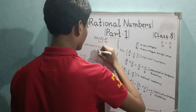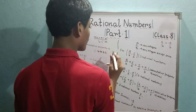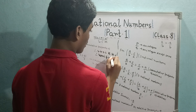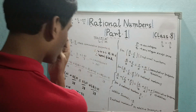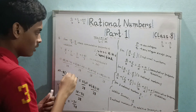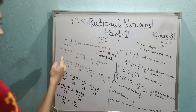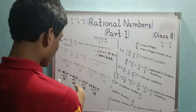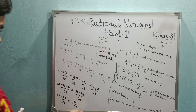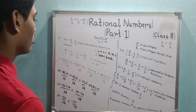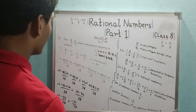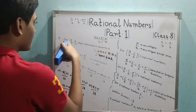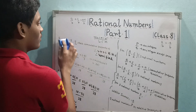Both sides equal minus 22 by 28. Therefore LHS equals RHS, therefore verified. Whenever you see left hand side equals right hand side, it is verified. Just check the property by putting the numbers in the form a by b plus c by d equals c by d plus a by b.